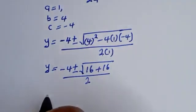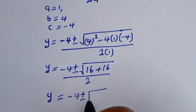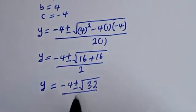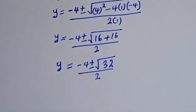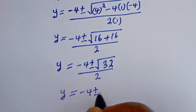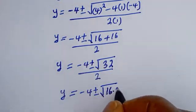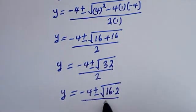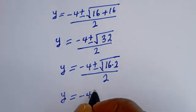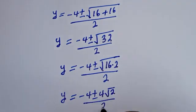So y is equal to minus 4 plus or minus square root of 32, divided by 2. The square root of 32 can be written as square root of 16 times 2, which simplifies to 4 root 2. So y is equal to minus 4 plus or minus 4 root 2, divided by 2.